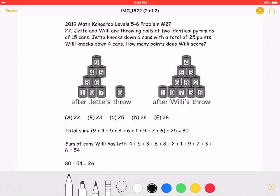To start, the problem asks how many points Willie scores. This means we don't need to necessarily find all the cans he knocked down and then add them up, but just find how many points he scored in total.